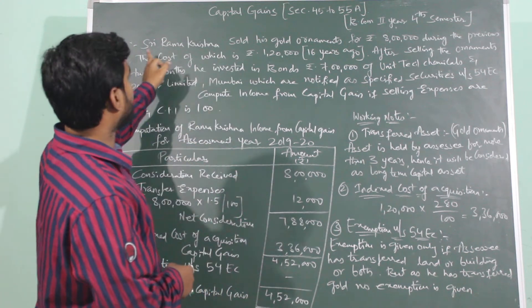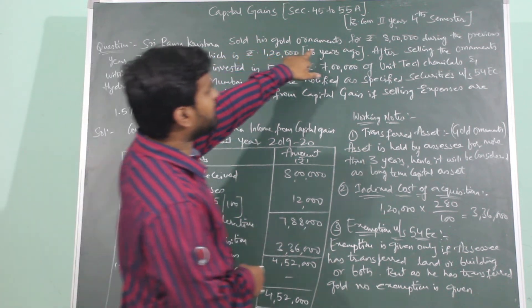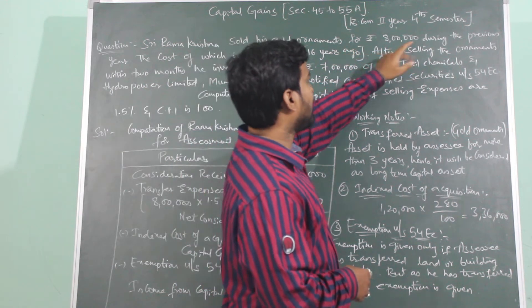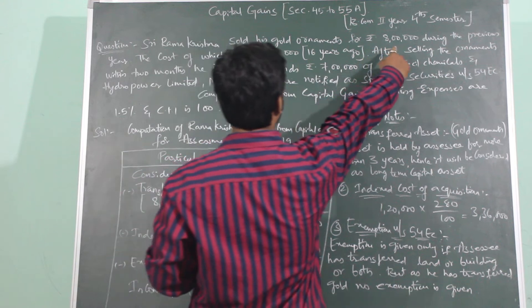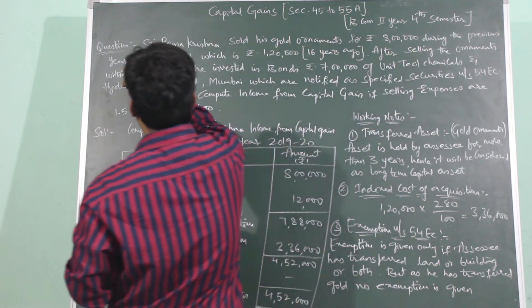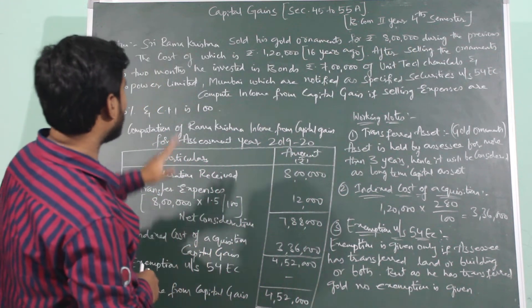Let us take the question. Sri Ramakrishna sold his gold ornaments for Rs. 8 lakhs. Assessee ka naam kya hai? Ramakrishna. He has sold his gold ornaments for Rs. 8 lakhs during the previous year, matlab 2018-2019 mein.